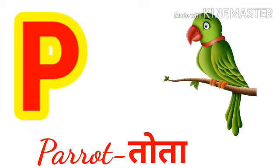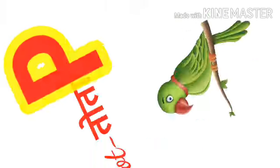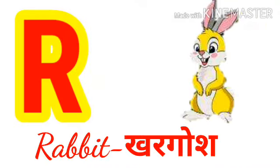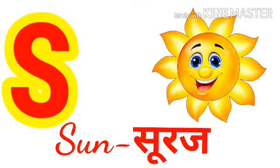parrot means tota. Q for queen, queen means rani. R for rabbit, rabbit means kargosh. S for sun,